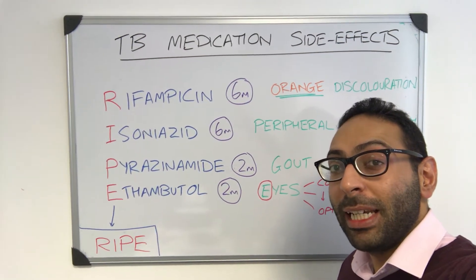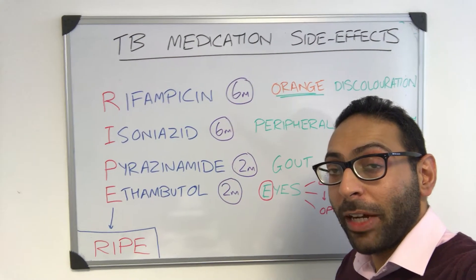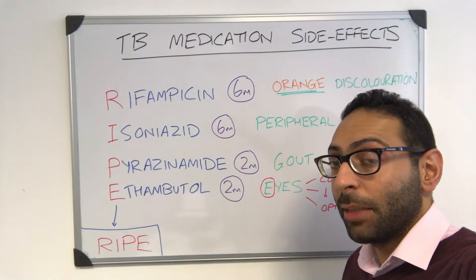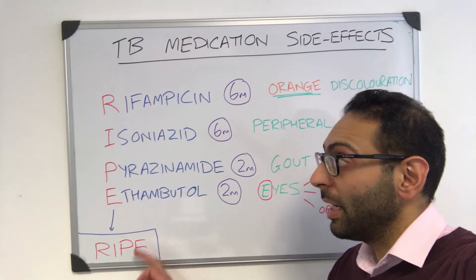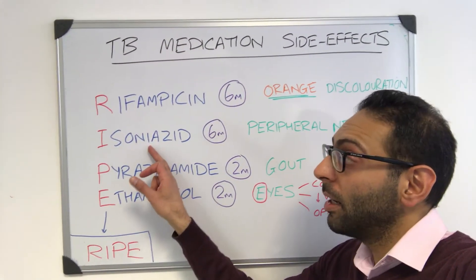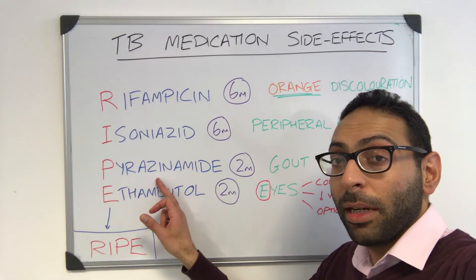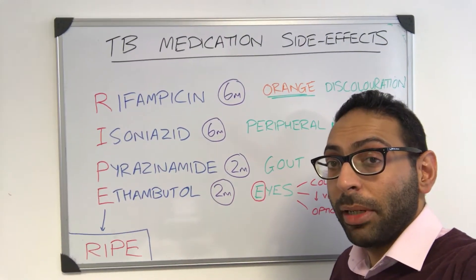Quick video about TB and TB medications and some of the key side effects to remember. When you think about TB drugs, think about RIPE — R-I-P-E: R for Rifampicin, I for Isoniazid, P for Pyrazinamide, and E for Ethambutol.